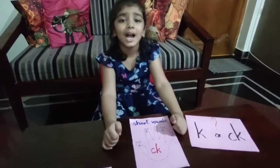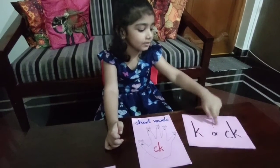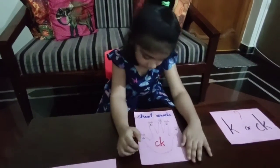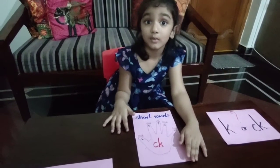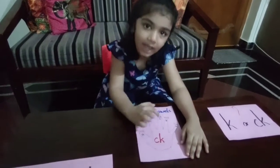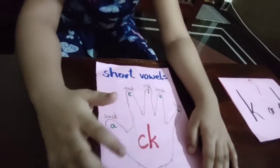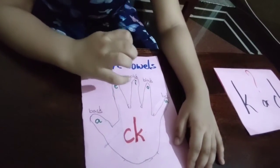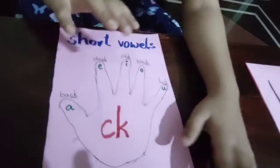Now I am going to learn when to use K and when to use CK. Short words use CK — it means if a vowel is alone, we use CK. Here are a few examples: back, check, pick, block, luck — all alone.